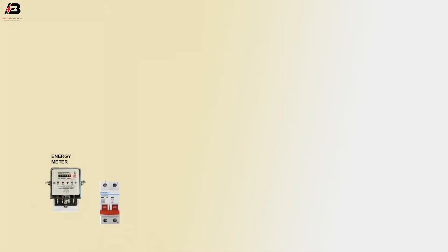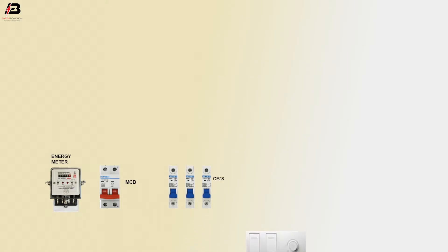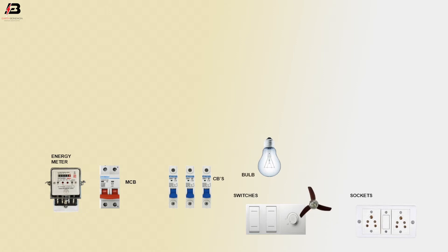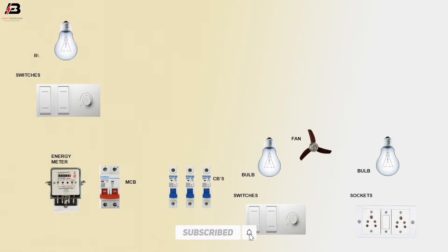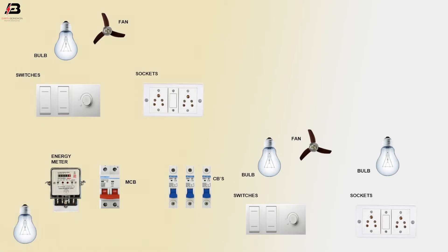Single phase energy meter. Double pole MCB. Single pole 3 circuit breakers. Room 1: switches, sockets, bulb 1, fan, bulb 2. Room 2: switches, bulb 1, fan, sockets and bulb 2.